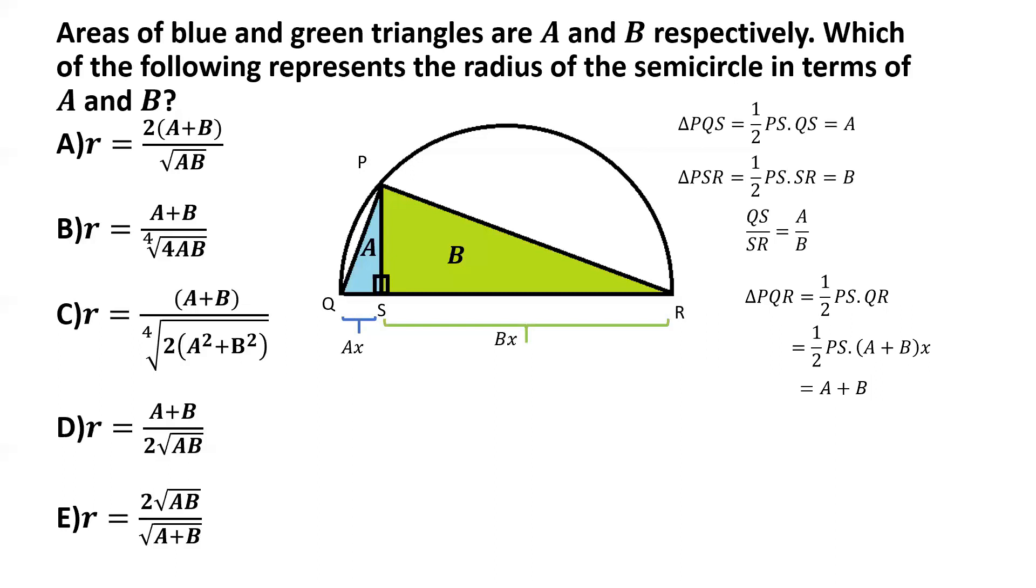And from this, we can basically obtain what PS is. So PS turns out to be simply 2 by X because A plus B gets cancelled out from both sides of the equation. And we are left with half PS multiplied by X equal to 1, from which it's pretty simple to get PS is equal to 2 by X.